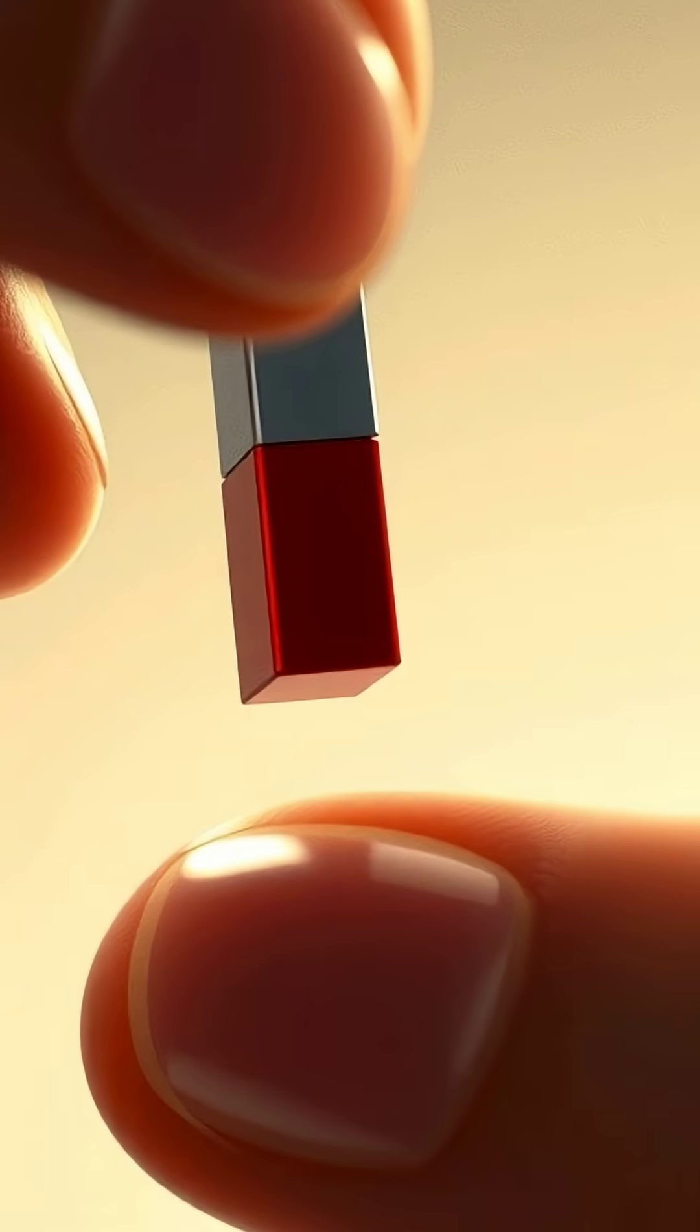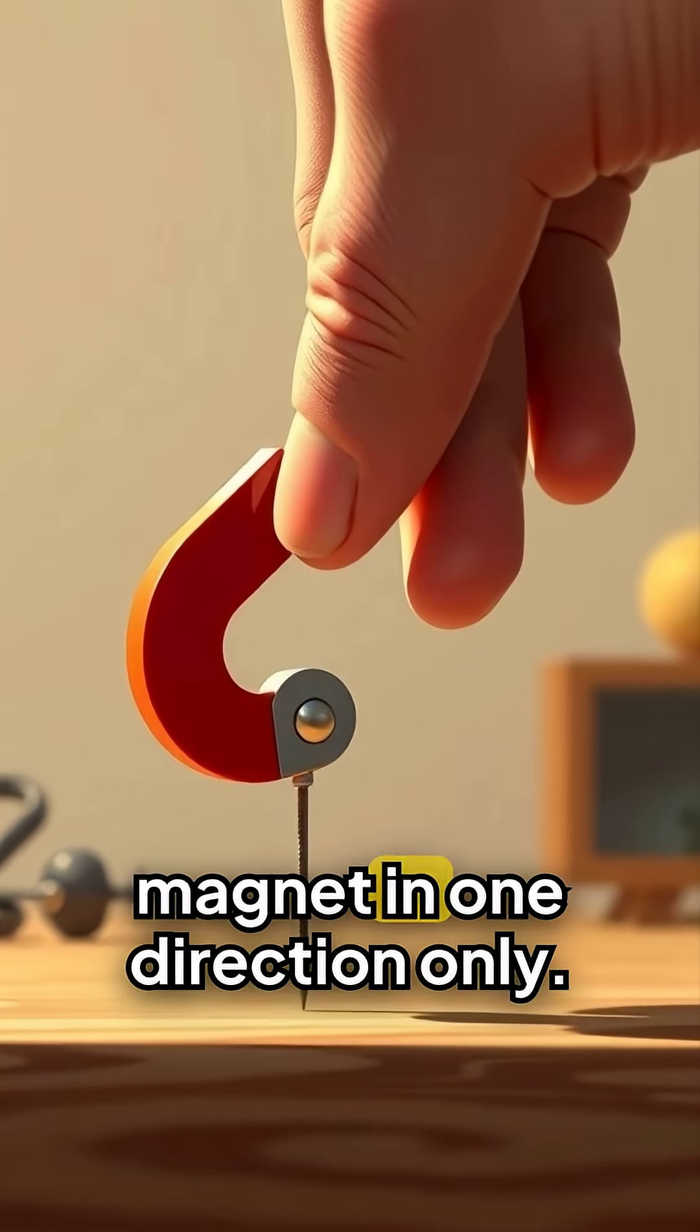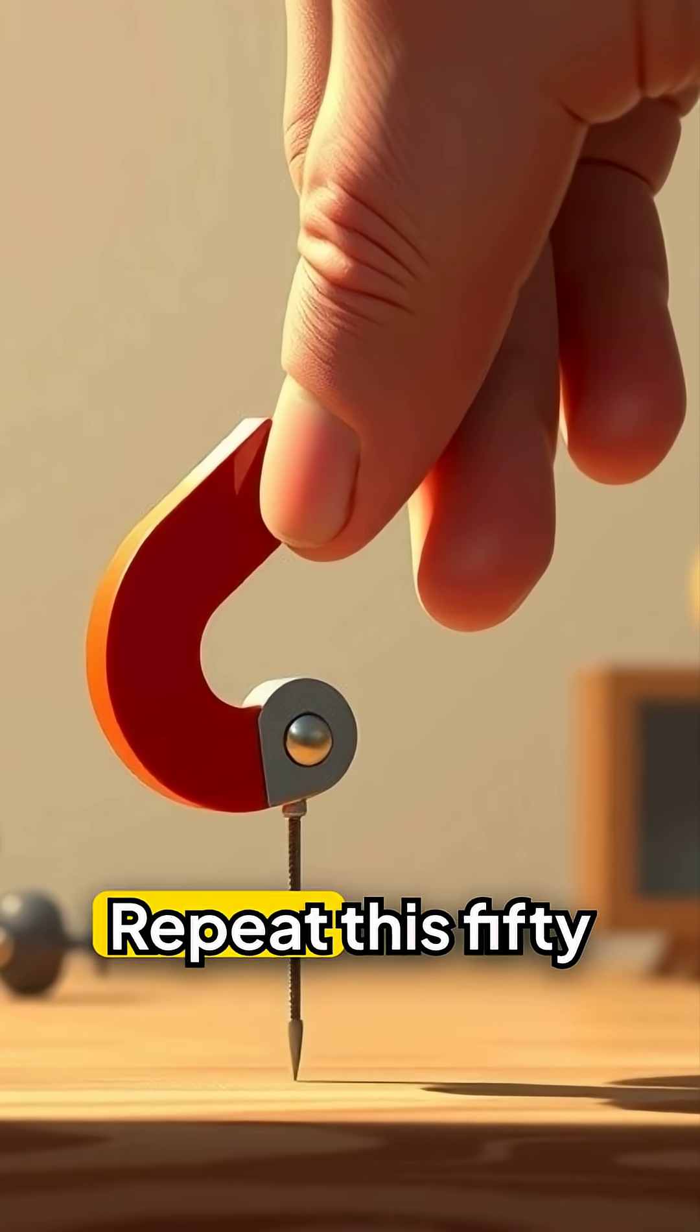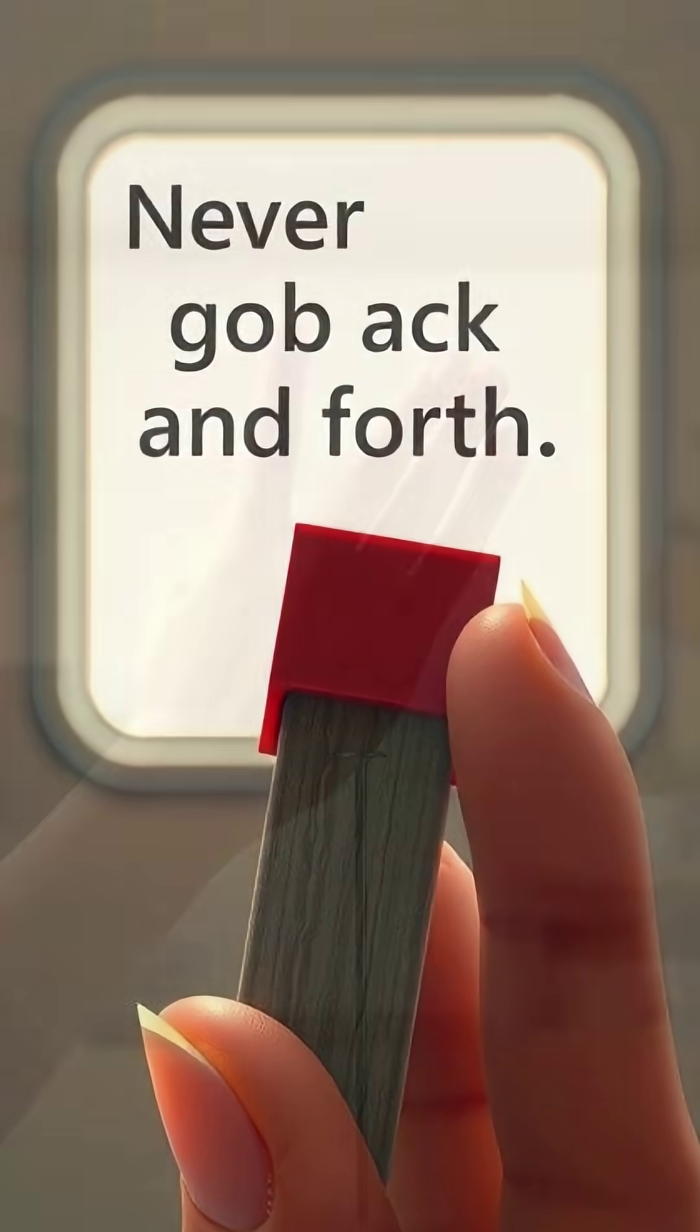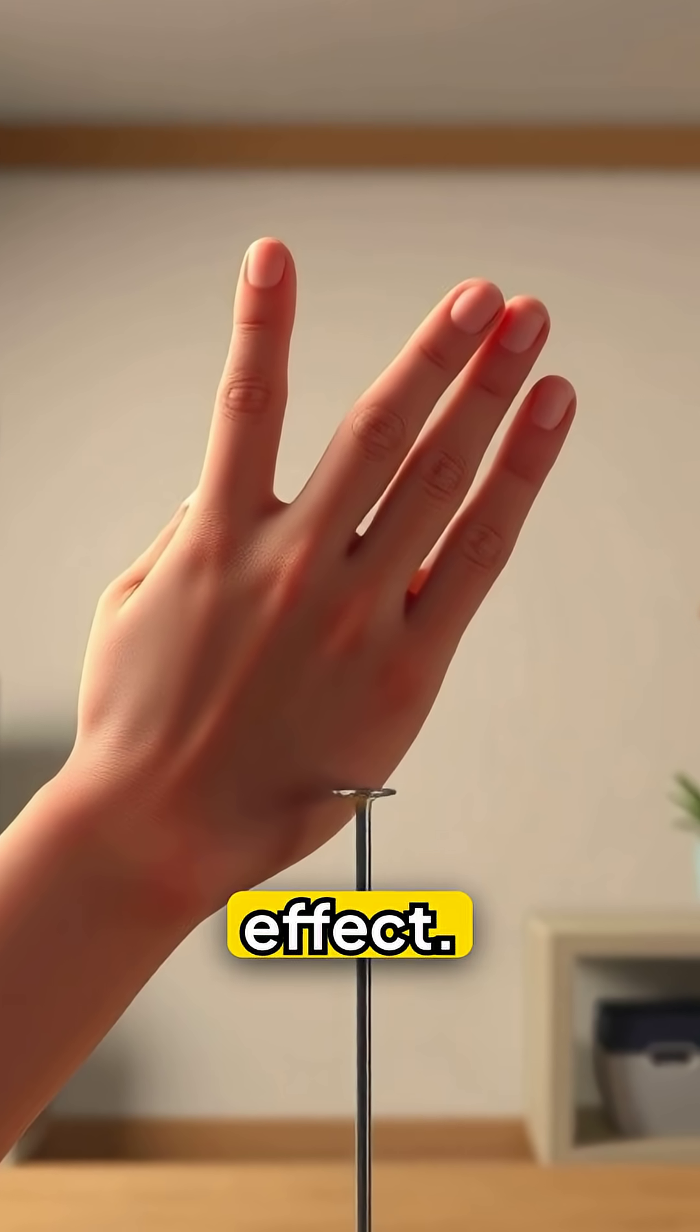Method 1 is simple. Stroke the nail with your magnet in one direction only. Repeat this 50 times. The key is to never go back and forth as that cancels out the magnetic effect.